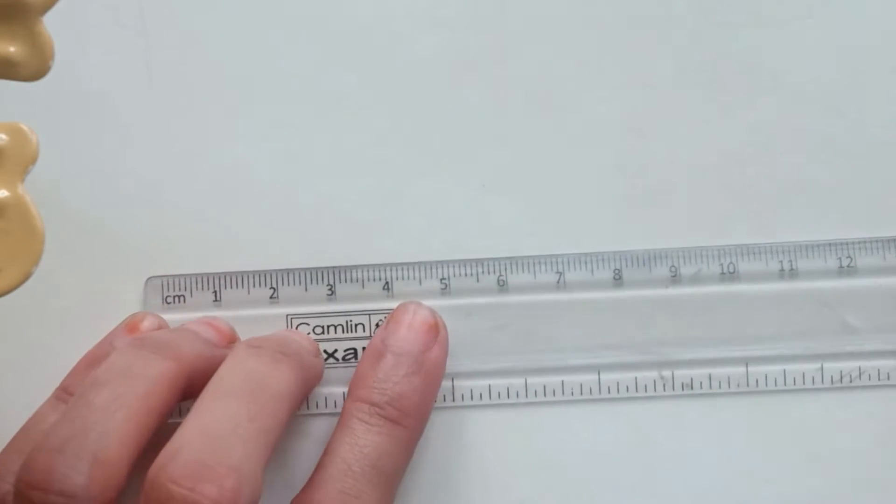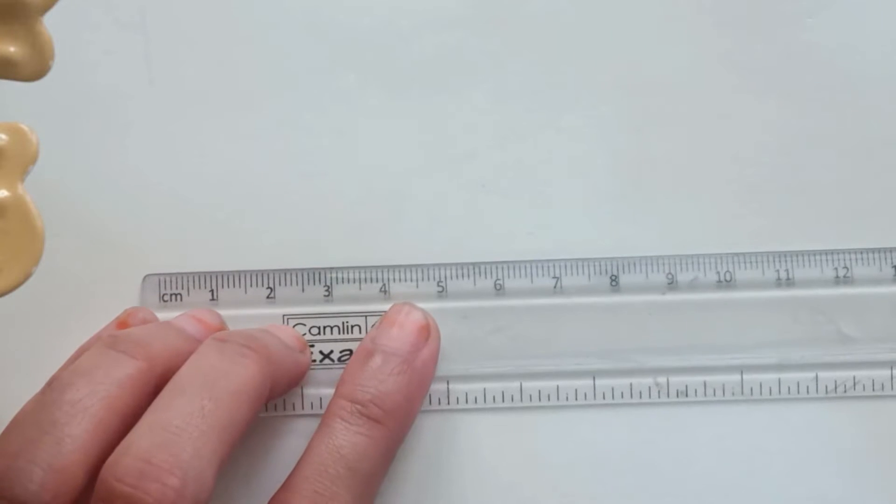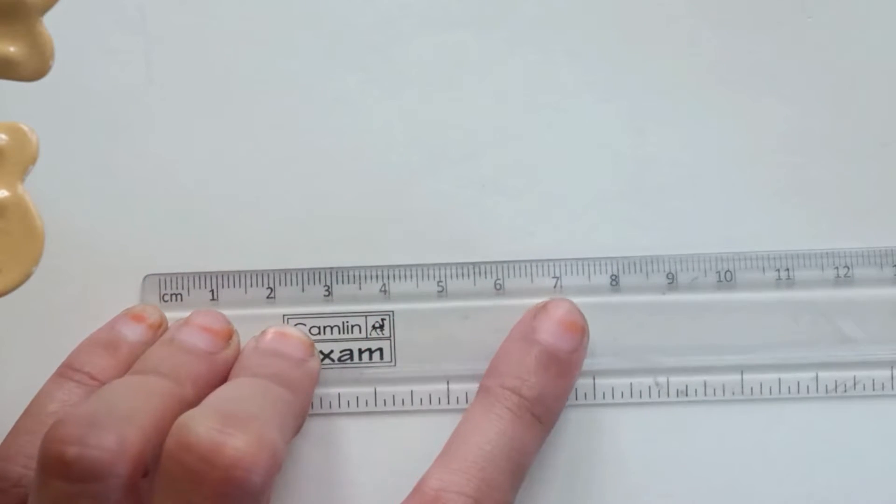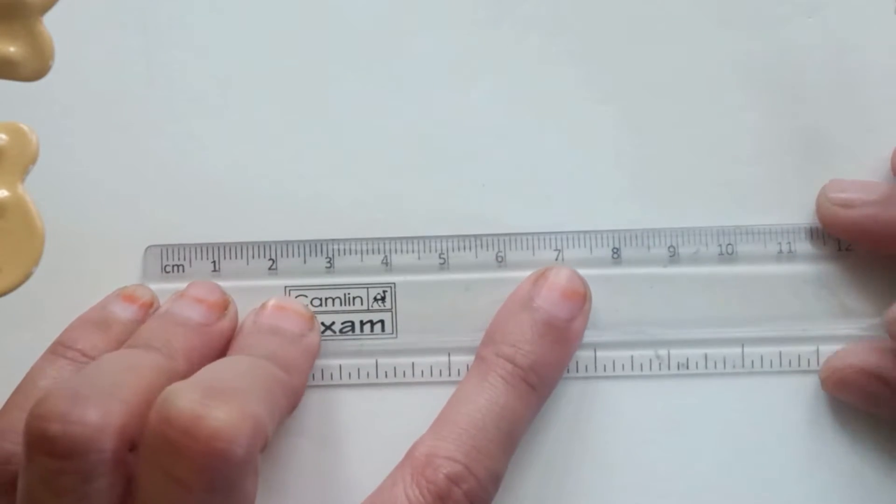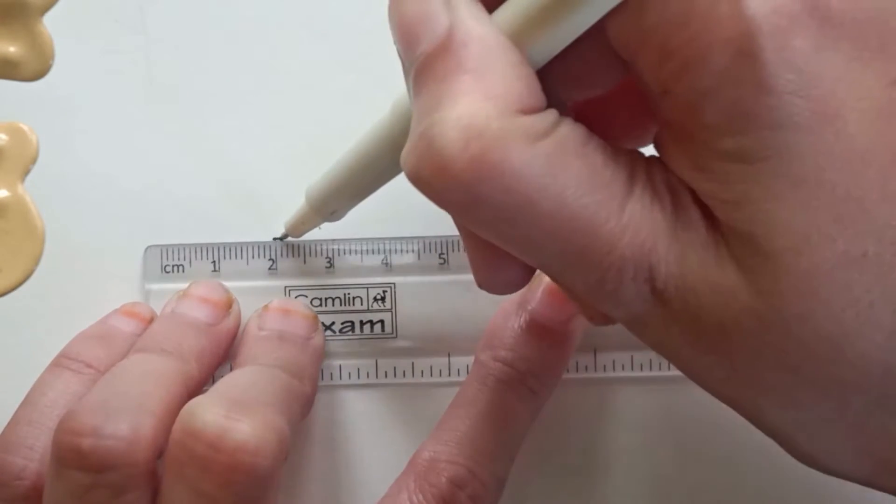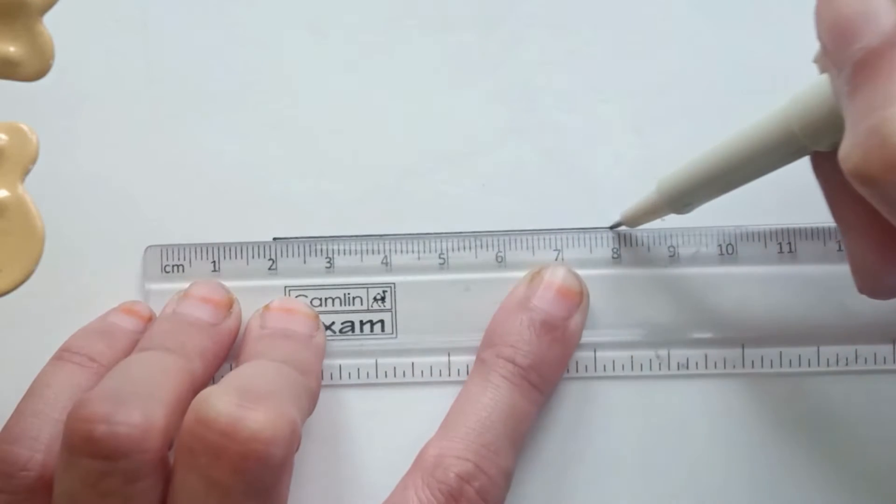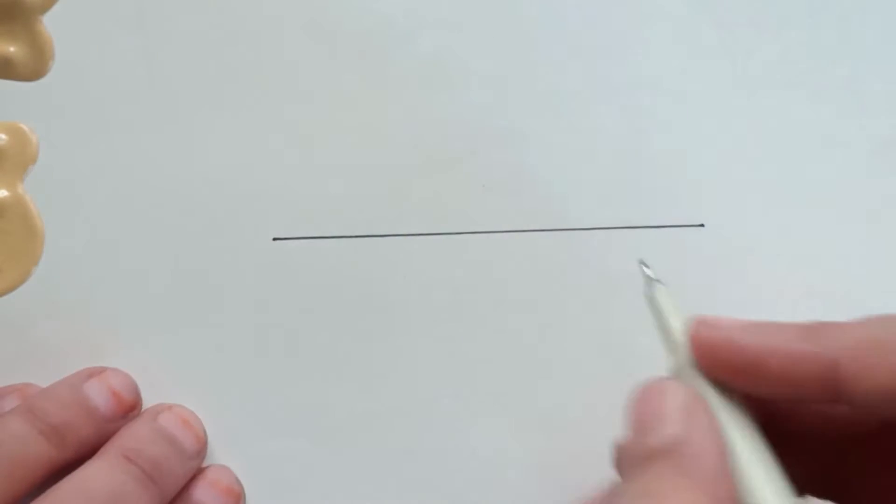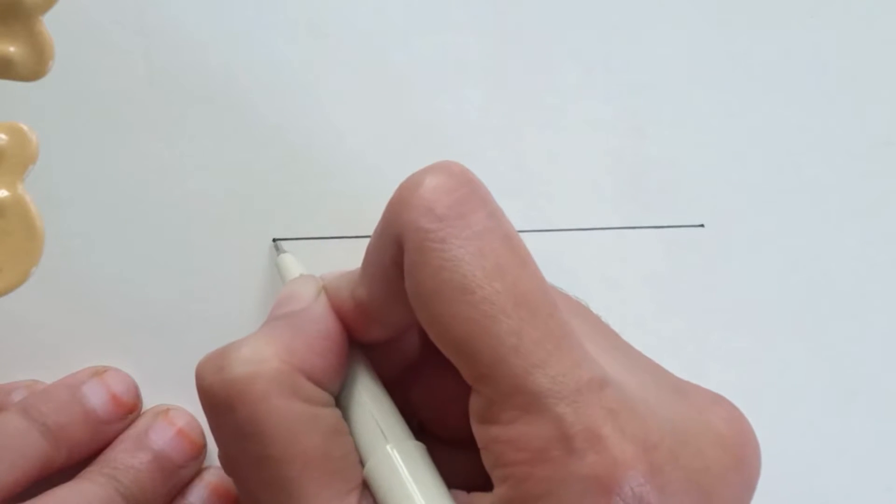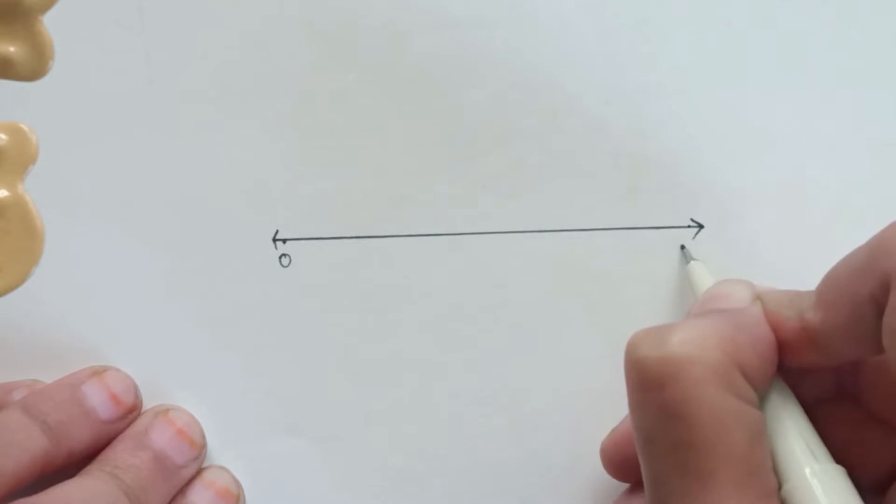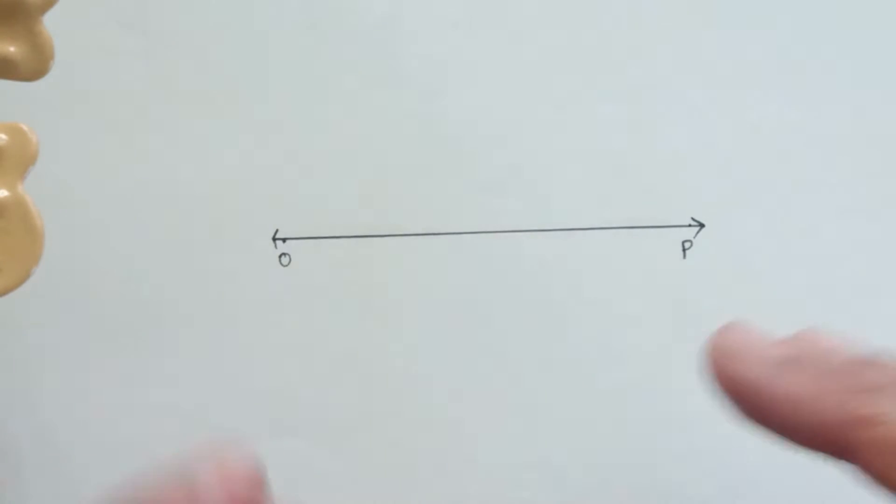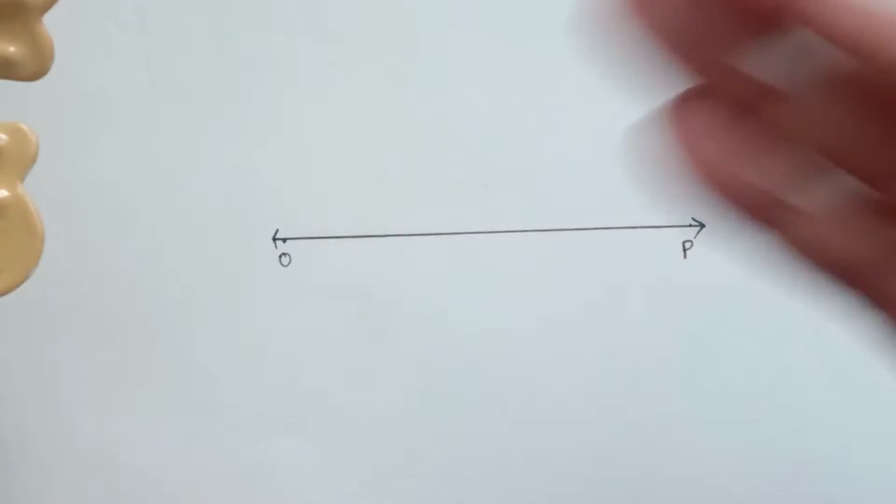So let's begin. The first step is you have to draw a horizontal line. Just place your scale on a paper and draw a horizontal line.